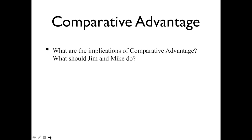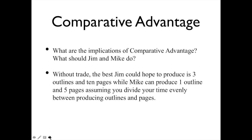The implications here are that Jim and Mike should engage in trade. Without trade, the best Jim could hope to produce is three outlines and 10 pages — splitting his time — while the best Mike could hope to produce is one outline and five pages — splitting his time.